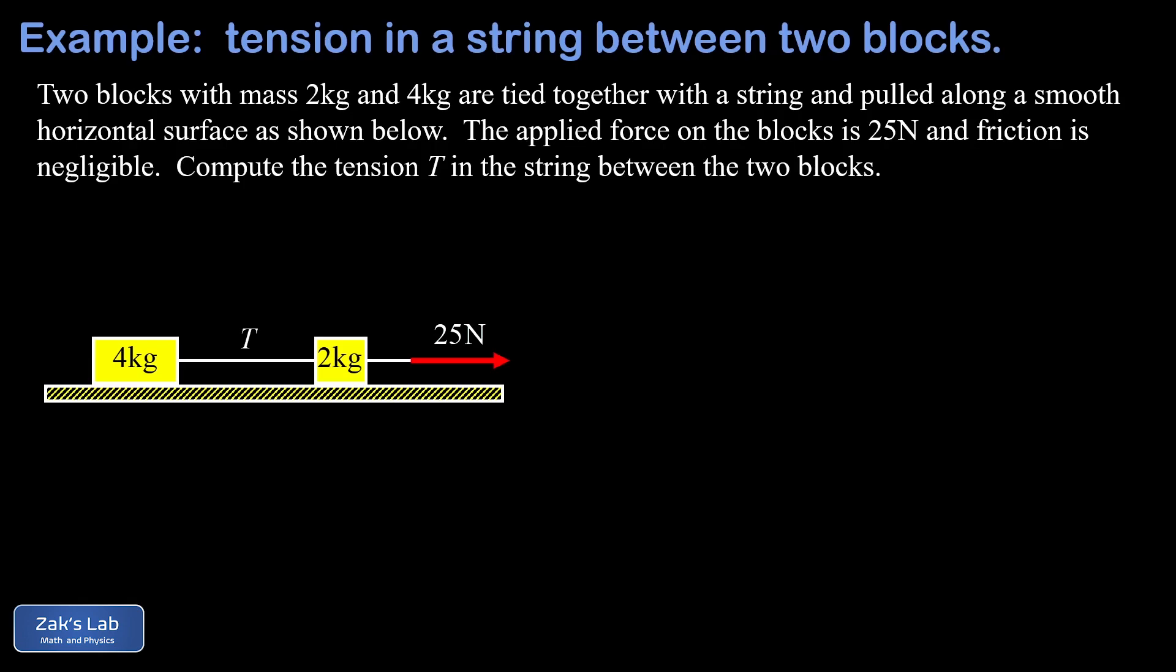So we start with probably the most efficient way to solve the problem. In this approach, we view the two masses as a single 6 kilogram mass. This is allowed because we know the acceleration of both masses must be the same.